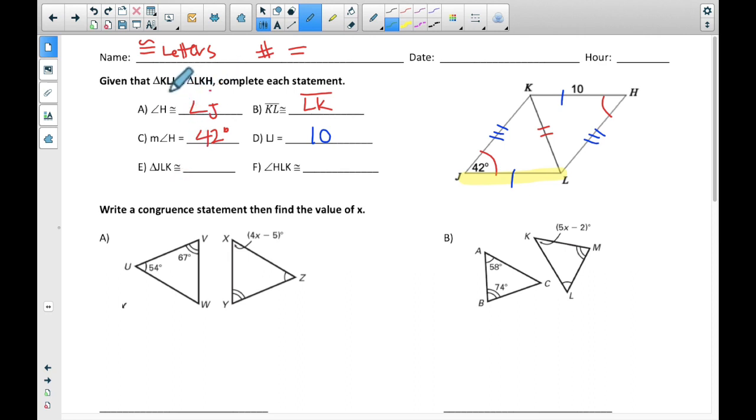So JLK, that means I can go HKL. I kept the J with the H. I kept the L with the K, just like up here, the L and the K went together. And I kept this K with this L. So they all matched up.